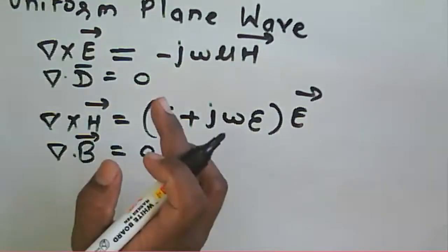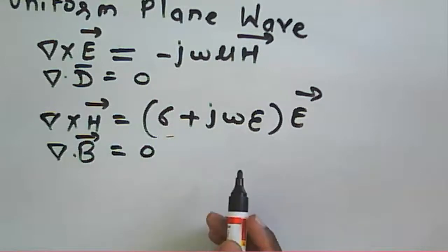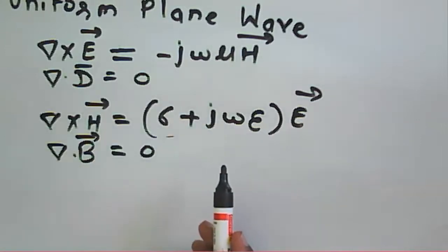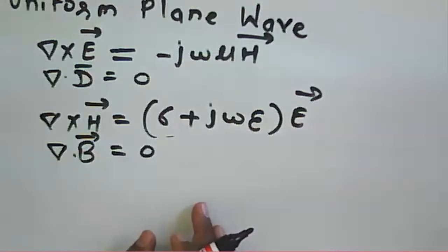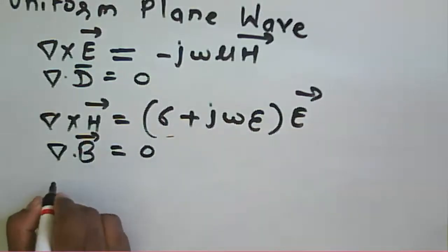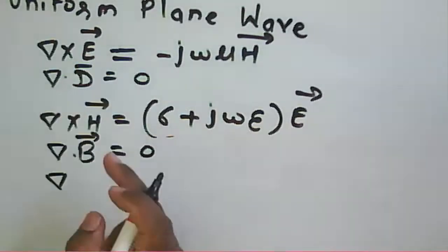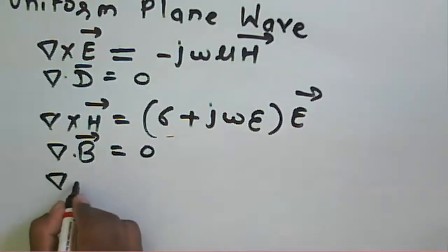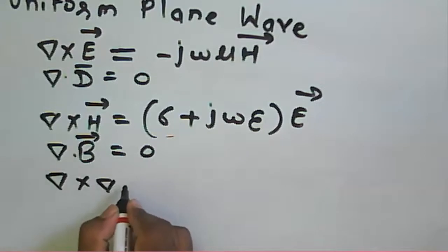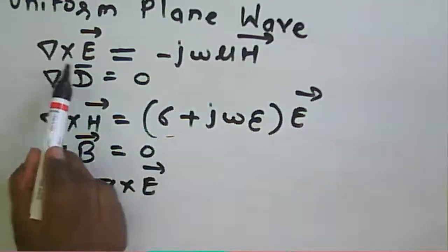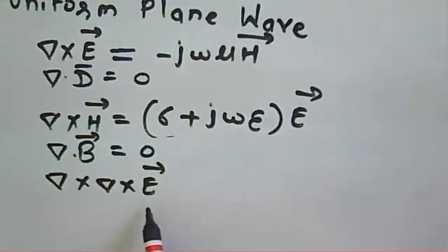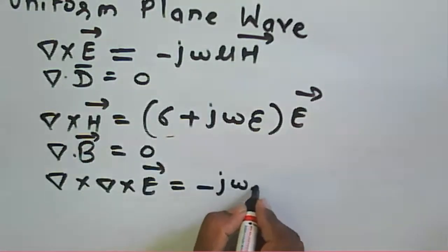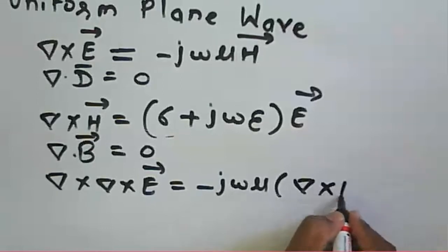We have replaced ∂/∂t with jω, giving us Maxwell's equations in the frequency domain. To obtain the wave equation, we take del cross of del cross E. Del cross E equals minus jωμH, so del cross (del cross E) equals minus jωμ (del cross H).